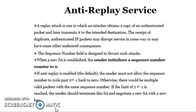When a new security association is established, the sender initializes the sequence number counter to 0. If anti-replay is enabled by default, the sender must not allow the sequence number to cycle past 2^32 minus 1 back to 0, otherwise multiple valid packets with the same sequence number could exist. If the limit of 2^32 minus 1 is reached, the sender should terminate that association and establish a new association with a new key.